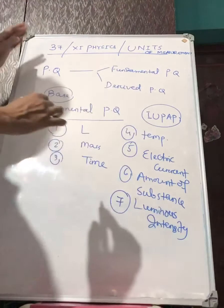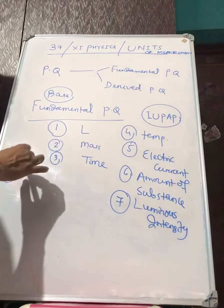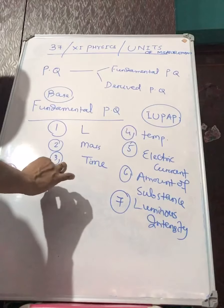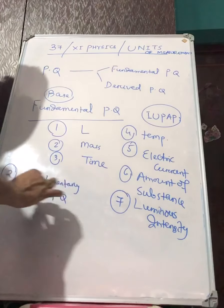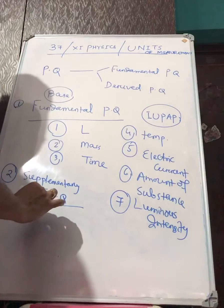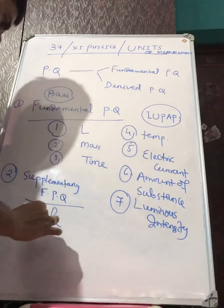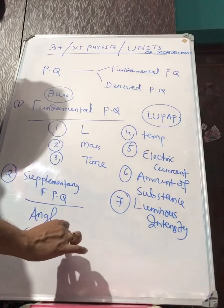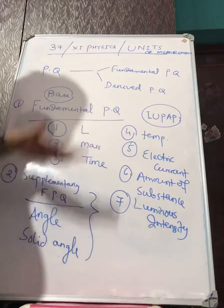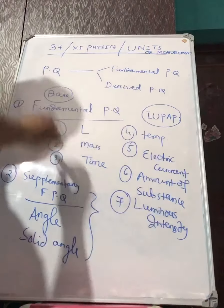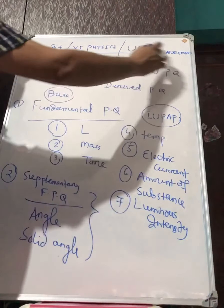Besides these seven fundamental physical quantities, two other physical quantities are also added, called supplementary fundamental physical quantities. These two are: one is plane angle and the other is solid angle. Altogether, there are nine fundamental physical quantities — seven that are initially defined and two later added.